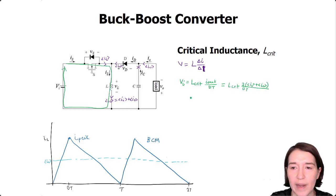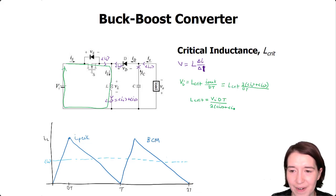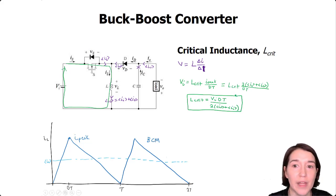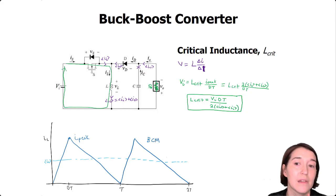Now let's rewrite this so that L_crit is by itself — solving for L_crit gives the general expression in terms of average output current and average input current. This expression works if you know your input and output currents. Let's go a little further and assume we have a resistive load of resistance R, so we can take the calculation further.